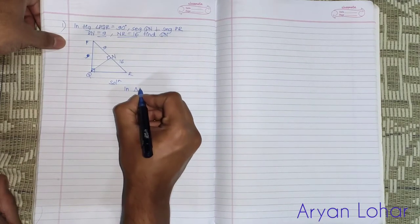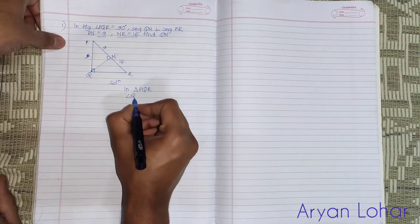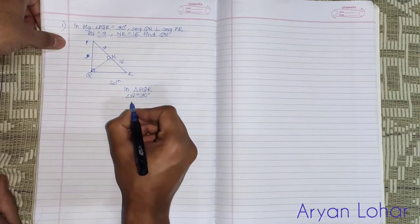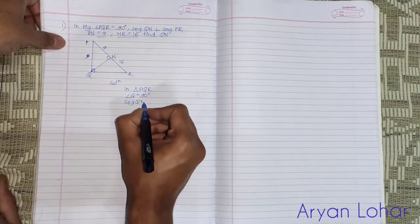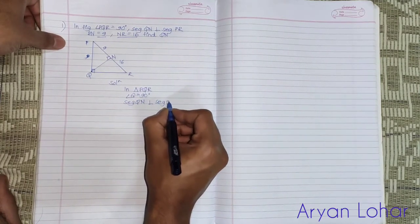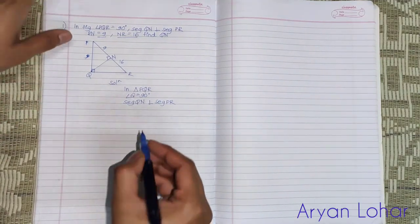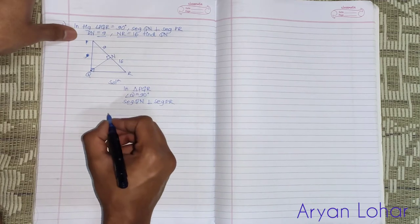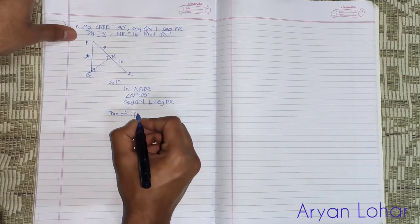In triangle PQR, angle Q is equals to 90 degrees and segment QN perpendicular to segment PR. Then, as per the theorem of geometric mean: